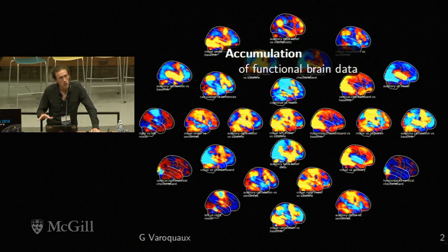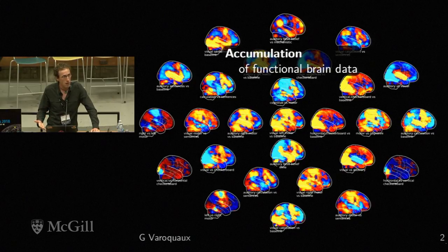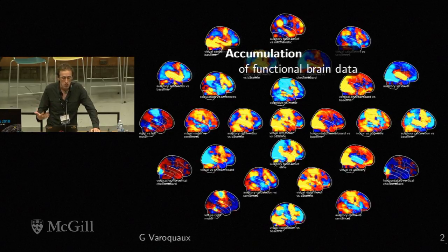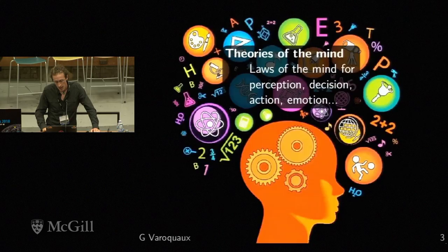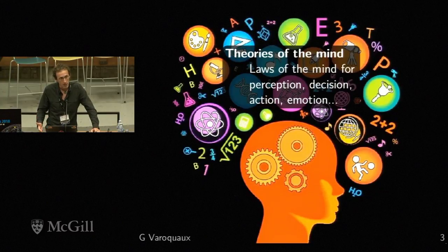The start of this research program is that we're really accumulating functional brain data that is extremely rich and is getting more and more standardized and reusable — thanks to the effort of mostly people who are here. And really the question is, how are we going to use this to ground theories of the mind?